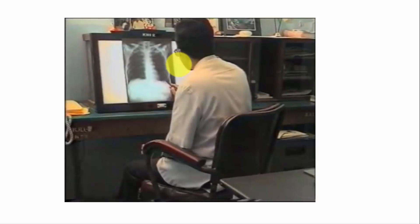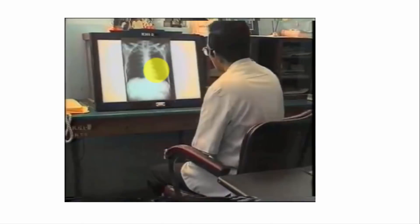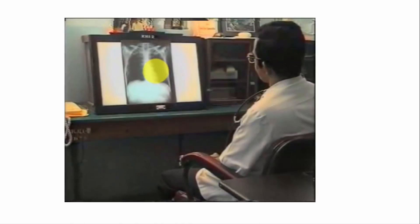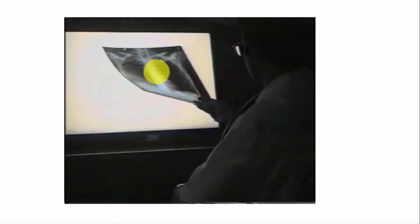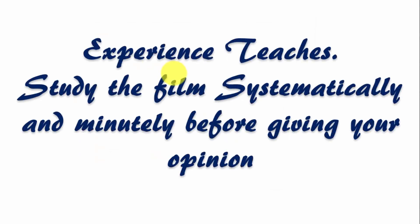If you are examining the X-ray from very close distance, you might miss some gross opacities, so make sure to step back and examine it from a little distance. Some opacities are more clearly seen when you view the chest X-ray at certain angles. Students often directly focus on the pathology and comment, but it is always more beneficial to examine the film systematically from center to periphery before making a comment.